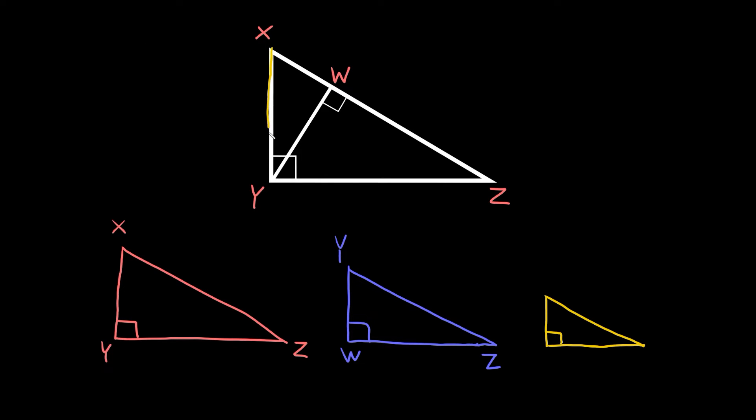So then we have our last triangle, the little one right here. And as we know this was the right angle. So since the right angle over here is at W that means this right angle we have to label it as W.